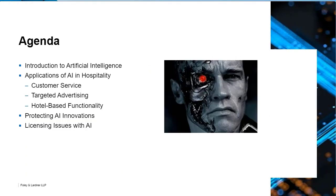What we're going to talk about today: we're going to talk about what is artificial intelligence — we hear the term everywhere, but what is it really? We'll talk about some examples of how it's used in hospitality, how it could be used, how it has been used. We'll talk about protecting AI inventions — if you have some great new way of using it, what are the ways that we can protect it? And we'll also talk about licensing issues with AI or procuring AI-type systems for your use. You don't have to necessarily build them all yourself, but sometimes when you work with others, there are issues that may arise.